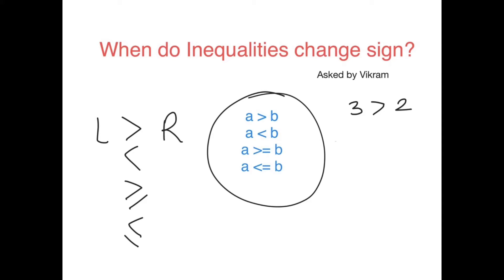This inequality says the left side which has the value three is more than the right side which has the value two. But things are not always that simple. For example, we will get an equation like: (x + 1) / (x² - 1) is greater than four.